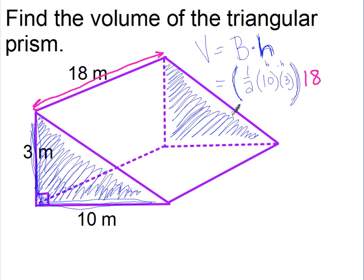We'll calculate the base area of your triangle: one half of 10 times 3 is 15. So 15 times 18 is going to give us the volume for your triangular prism. Let's see, 15 times 18 is 270.